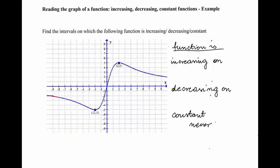Starting with the leftmost part, if you follow the graph you can see that the graph is going down — the graph is falling — until it reaches the point (-2, -5). So this part is falling and therefore the function is decreasing. Once we reach the point (-2, -5), the graph starts to rise.